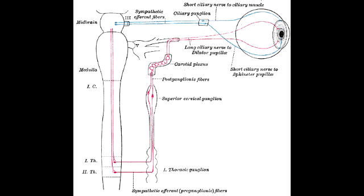Describe the route of the second order neuron for mydriasis. The second order neuron exits at the level of T1 and travels along the cervical sympathetic chain near the lung apex and the subclavian vessels, eventually making its way to the superior cervical ganglion.